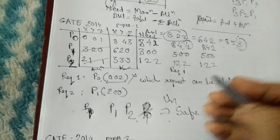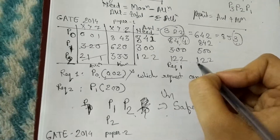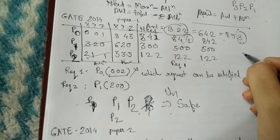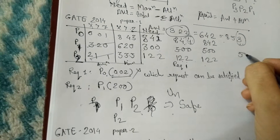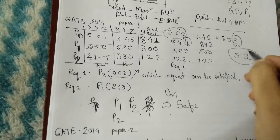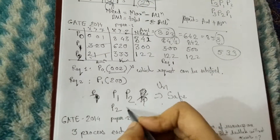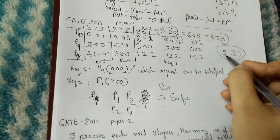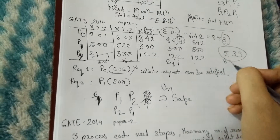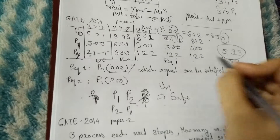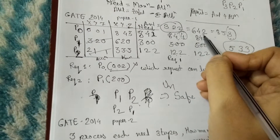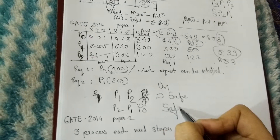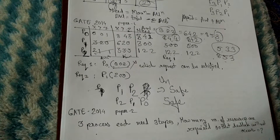By using available (3, 2), I can satisfy the need of P2. After P2 releases its resources, the new available becomes (5, 3). Using (5, 3), I can satisfy P1's need; after P1 releases, available becomes (8, 5, 3). By using (8, 5, 3) I can satisfy the need of P0, so this is a safe state with no deadlock.